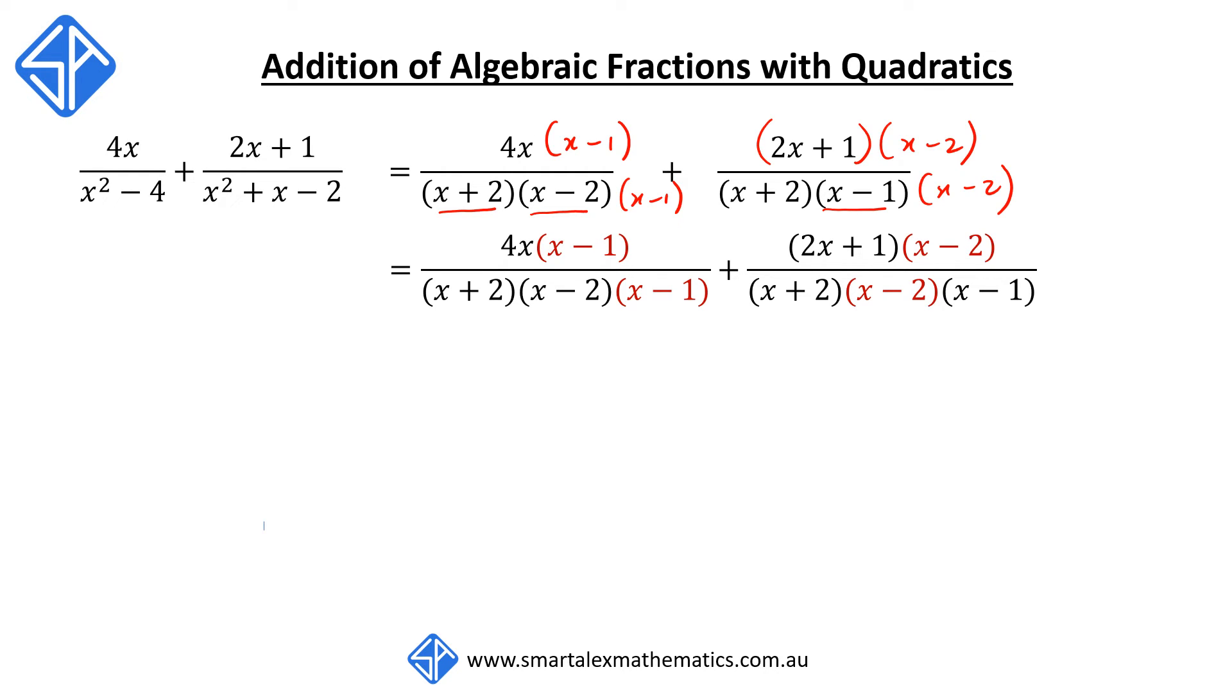Our next step now is to expand the numerators of both fractions. So for the first fraction, 4x times x will give us 4x squared. 4x times negative 1 will give us negative 4x.